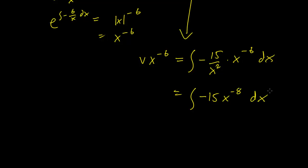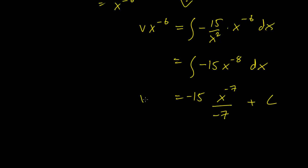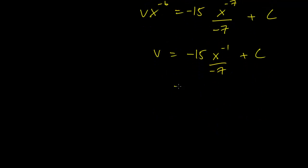Let's do this integral. This is going to be minus 15 x to the minus 7 over minus 7 plus c. Multiplying both sides by x to the 6th power, v equals minus 15 times x to the minus 1 over minus 7 plus c times x to the 6th, which simplifies to 15 over 7x plus c times x to the 6th.